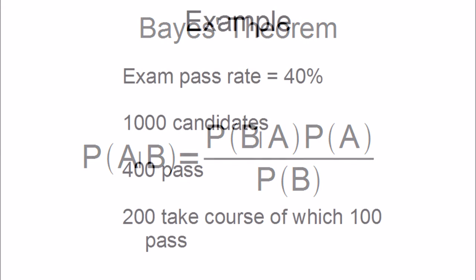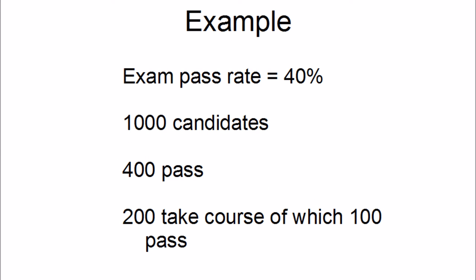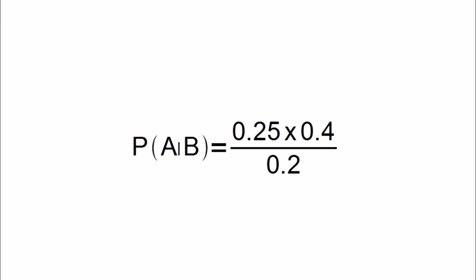As an example: an exam has a pass rate of 40%. A college offers an optional preparatory course. 1,000 people take the exam, of which 200 took the course. As expected, 400 pass, of which 100 took the course. What is the probability of passing the exam given that you have taken the course? The obvious answer is 50%. We can also use Bayes' theorem.